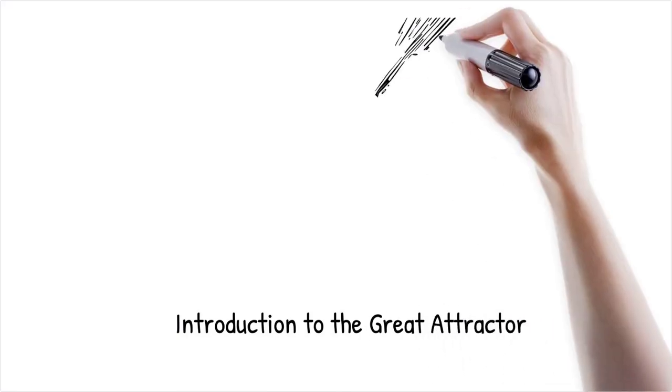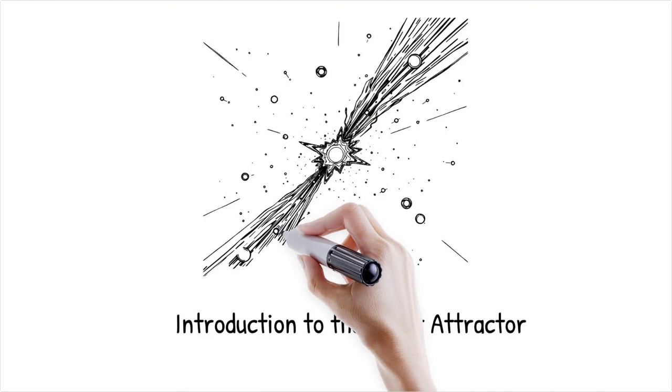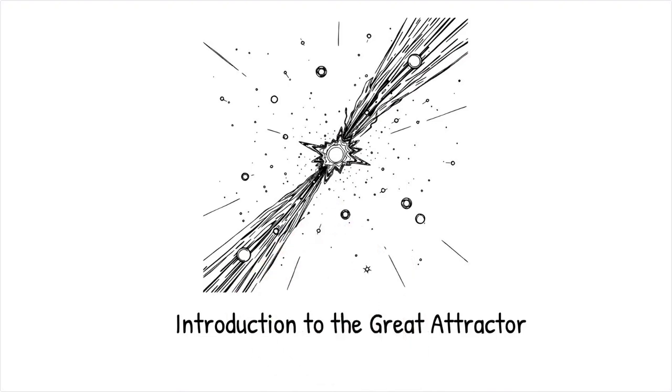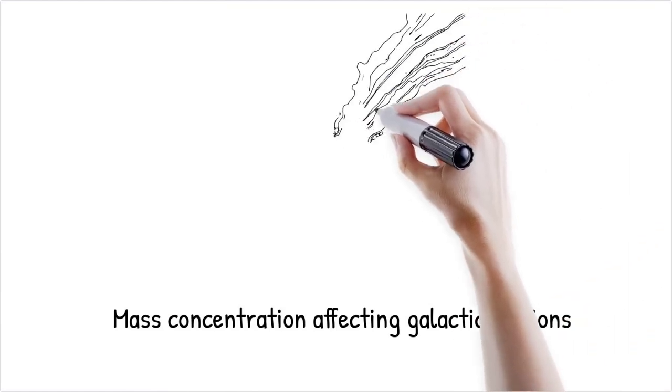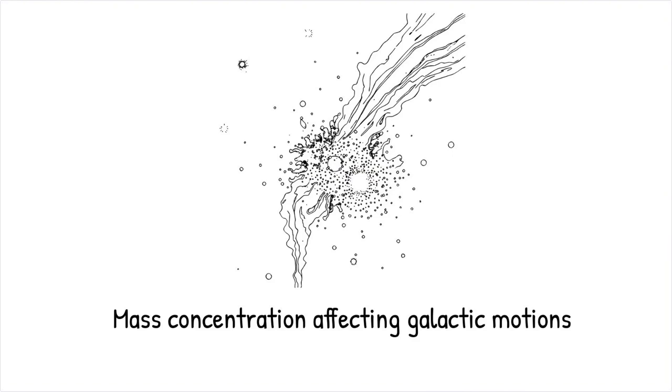The Great Attractor is a gravitational anomaly that appears to be drawing galaxies, including our own, toward a specific region in space. Its existence is inferred from the peculiar motions of galaxies deviating from the overall cosmic expansion. While not directly observable, the Great Attractor manifests as an area with an unusually high concentration of mass, influencing galactic motions. This phenomenon challenges our understanding of the large-scale structure of the universe.